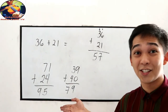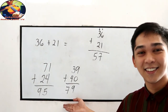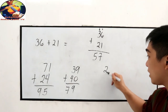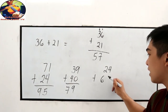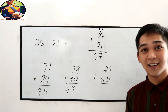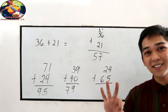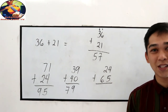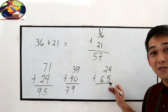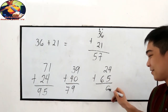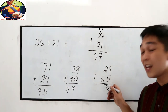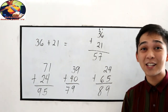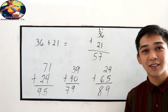Did you get the same answer? Very good. Lastly, let's say we have 24 plus 69. Can you do it within 3 seconds? 3, 2, 1. So 4 plus 9 is 13 — we write 3 and carry 1. 2 plus 6 is 8, plus 1 carried is 9. The answer is 93. That is how to add a two-digit number and a two-digit number.